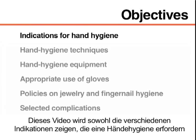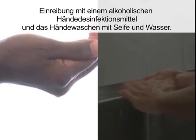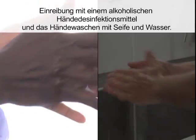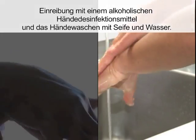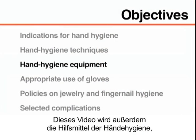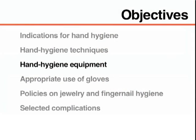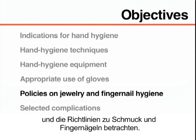This video will demonstrate the various indications to perform hand hygiene as well as two different hand hygiene techniques: hand rubbing with an alcohol-based hand rub formulation and hand washing with soap and water. This video will also review hand hygiene equipment, the appropriate use of gloves, and policies on jewelry and fingernail hygiene.